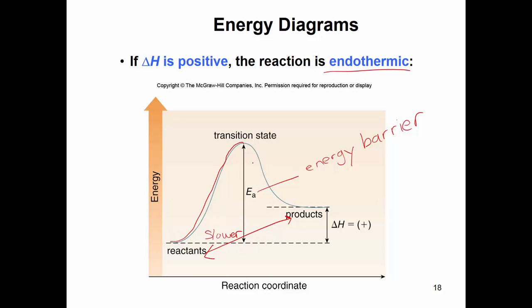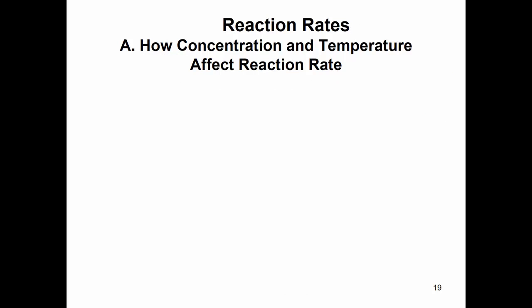This reaction has a much higher energy barrier, so it's going to be much slower than the previous reaction, and it is also endothermic. Endothermic means the reactants have stronger bonds and the reactants are more stable. That's it for energy diagrams — next we will look at reaction rates.